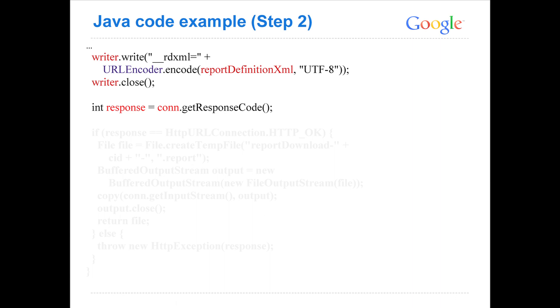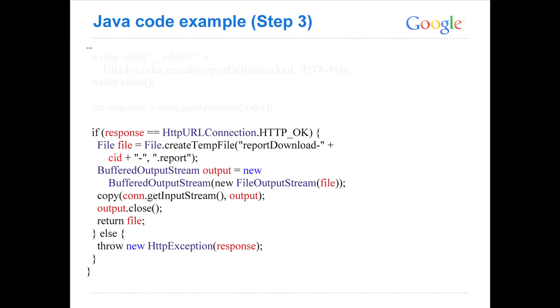Next, we write our parameter __RDXML and URL encode our report definition XML so it can be interpreted properly. We then get the response code, which makes the request and interprets the response. If the response is OK, meaning the report download was successful, we create a temporary file and copy from the input stream of the connection to the output stream of the file. There are many things you can do here — write it to a database, do some later processing, and so on.